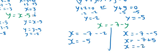So all four answers: when y is minus 2, x is minus 5; when y is minus 5, x is minus 2.